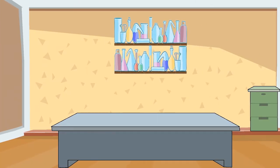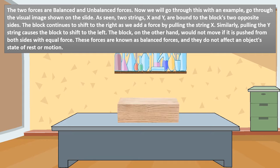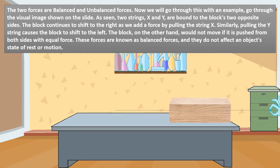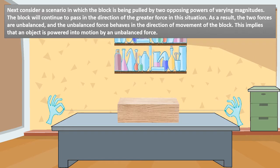So children, now we will discuss the two types of forces. Two forces are balanced and unbalanced forces. Now we will go through this with an example. Go through the visual image shown on the slide. As seen, two strings X and Y are bound to the block's two opposite sides.